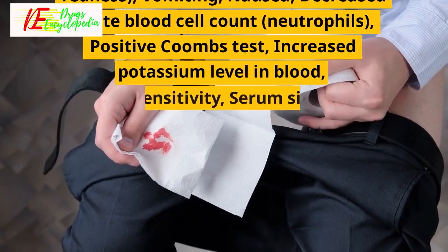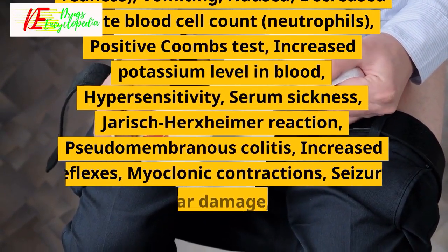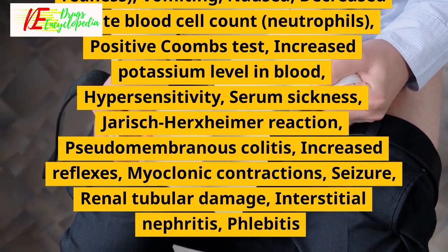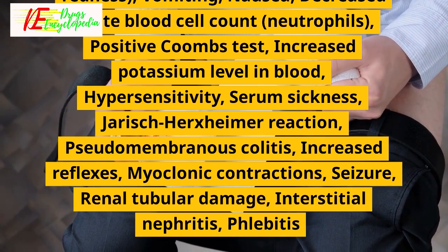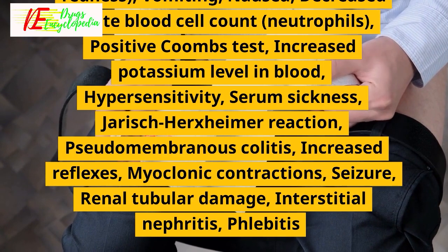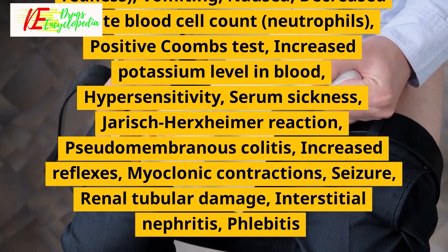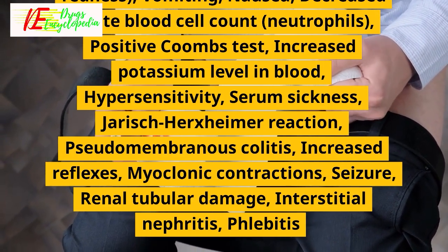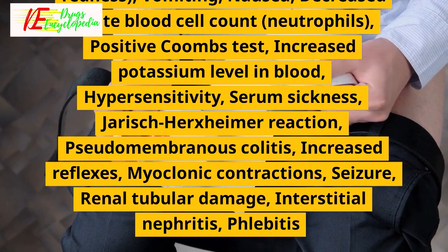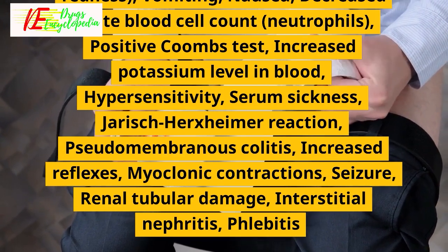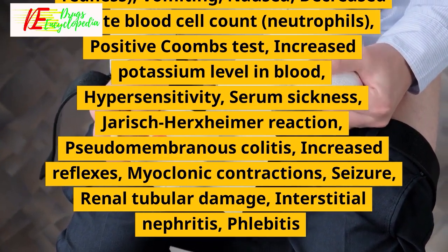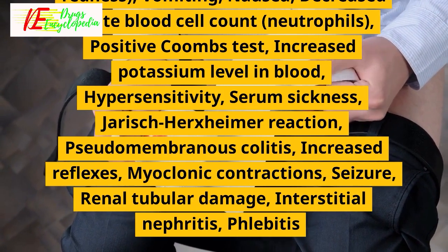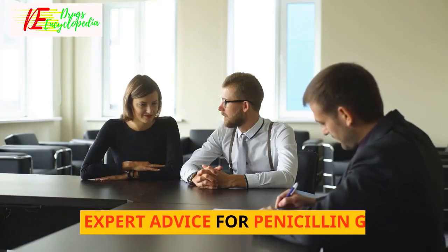Severe side effects of Penicillin G: injection site reactions including pain, swelling, and redness; vomiting; nausea; decreased white blood cell count (neutrophils); positive Coombs test; increased potassium level in blood; hypersensitivity; serum sickness; Jarisch-Herxheimer reaction; pseudomembranous colitis; increased reflexes; myoclonic contractions; seizure; renal tubular damage; interstitial nephritis; and phlebitis.